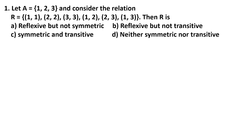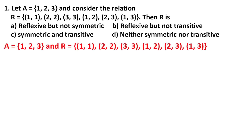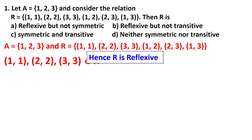Question number one is an MCQ. A relation R is given as a set of ordered pairs, and we have to check the nature of R. We check all three properties: reflexive, symmetric, and transitive. To check reflexive: an element must be related to itself. Since (1,1), (2,2), and (3,3) are all available in R, it is reflexive.